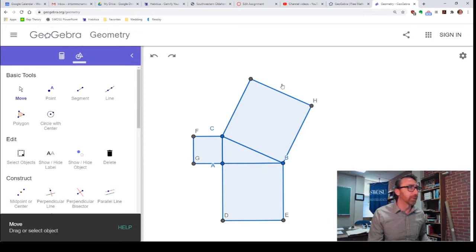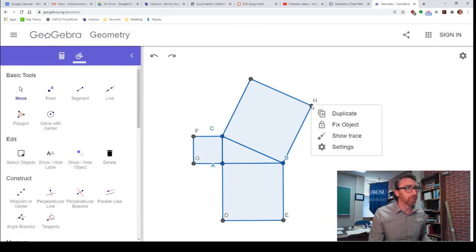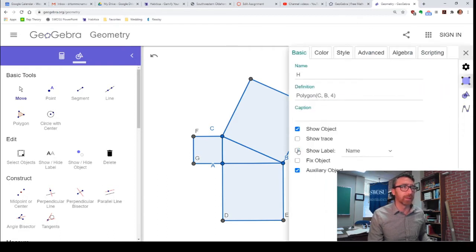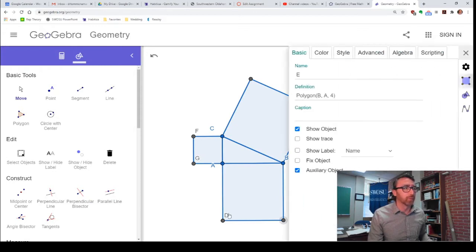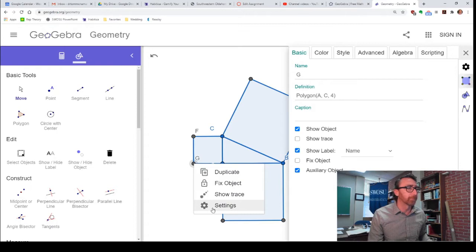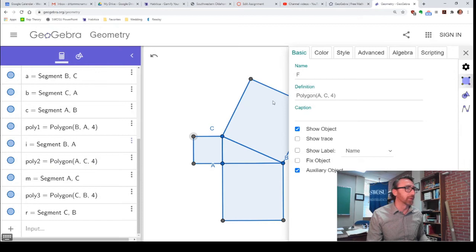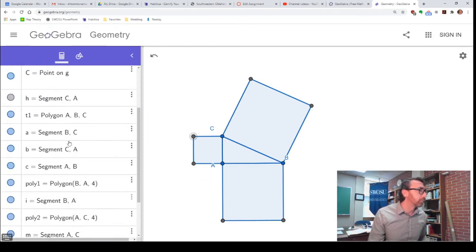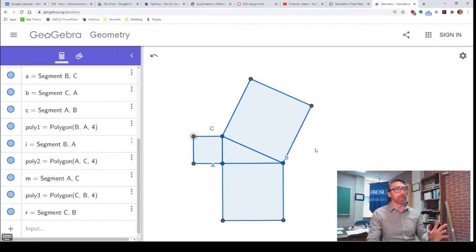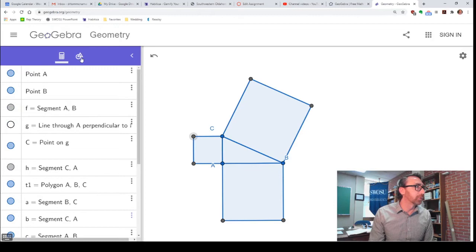This vertex J, I don't want that there. Back to the move tool. I must have had some other tool selected. That was why it was acting funny. So, we just don't want labels on any of these extra vertices.